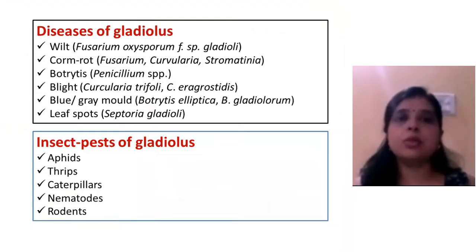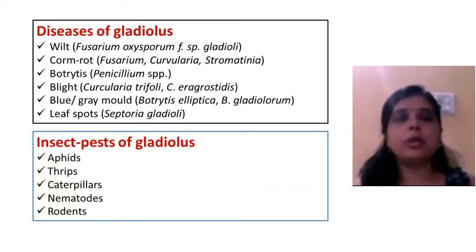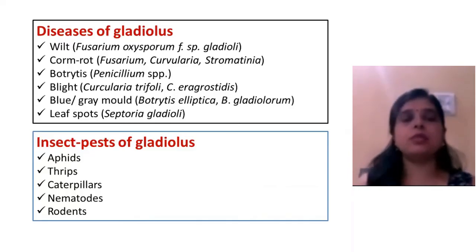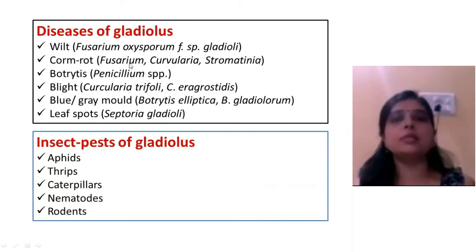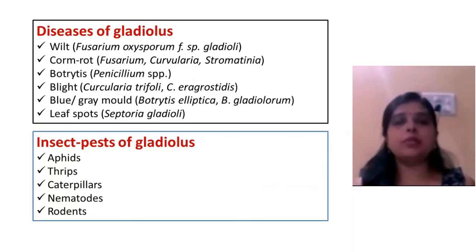Gladiolus suffers from a number of diseases: wilt, corm rot, botrytis blight, grey mold, and leaf spot. Among these, Fusarium wilt and corm rot are the most serious diseases. Insect pests affecting gladiolus include thrips, caterpillars, nematodes, and rodents. Thrips is a major problem, and rodents are also a major problem as they eat the gladiolus corms entirely in the field.